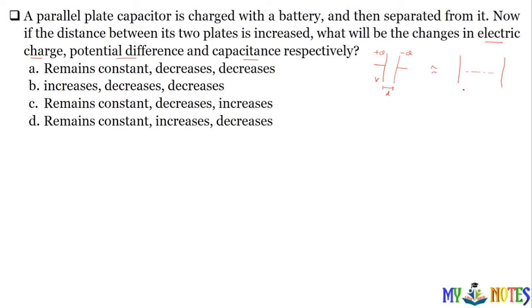Pehle isko already charge kar diya gaya hai capacitor, uske baad plate shift kiya gaya. To jo plates ko Q amount ka charge aa gaya, jab hum plates ke bich distance badayenge, to charge to utna hi rahega. Charge constant rahega, aur charge ki wajah se inke bich electric field setup hoti hai — electric field strength abhi wohi rahegi, to electric field constant rahegi. Charge bhi aapka constant rahega, yaani remains same.